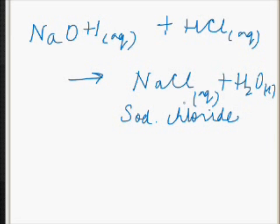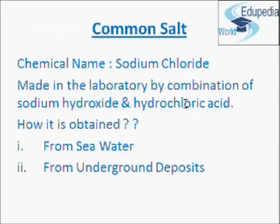The sodium chloride solution formed can be evaporated to obtain solid sodium chloride, but sodium chloride is never made in this way on a large scale. So how is common salt obtained? Common salt or sodium chloride occurs naturally in sea water and as rock salt. Common salt occurs in dissolved form in sea water, and in solid form as rock salt. Sea water contains many dissolved salts, the major one being common salt or sodium chloride.